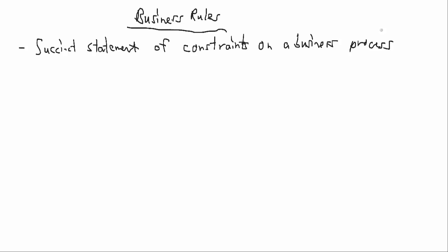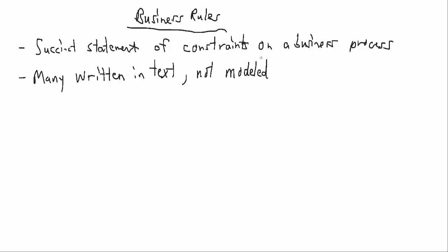Other business rules may not be so easy to capture in a diagram. We want to make sure we can describe the business rules constraining our processes so we can diagram them properly. Many of these rules will be written in text, not modeled. For example, only a valid licensed driver would drive the car. Even if we don't model a particular business rule, it should influence the overall structure and flow of the diagrams.